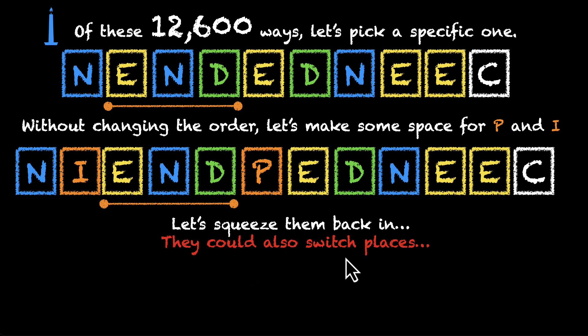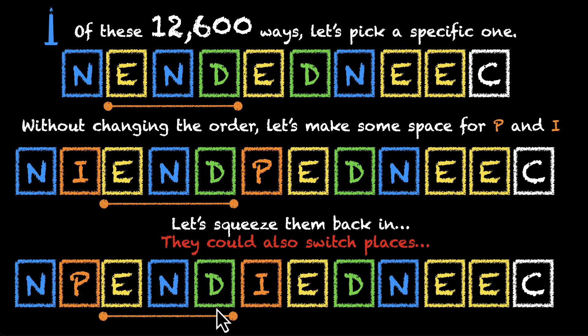But wait, they could also switch places. We've put I here and P here, but they can also switch places. P could be here and I could be here without changing the order. This gives us our second arrangement where P and I have three letters in between them. We are already making a lot of progress.